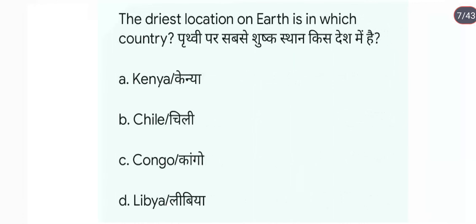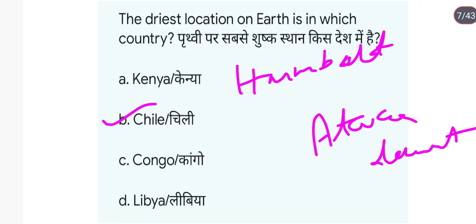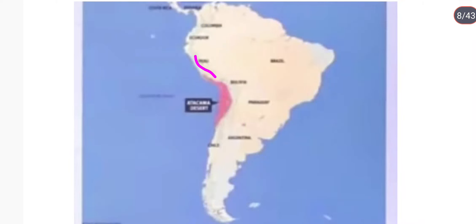The driest location on Earth is in which country? आपकी Chile में — Chile में Atacama Desert भी है। Atacama Desert और जो Peruvian and Humboldt current होती है, वो भी इसी area में पाई जाती है। This is Chile, यहाँ आपका Atacama Desert है, इधर से आपकी Humboldt current बहती है।